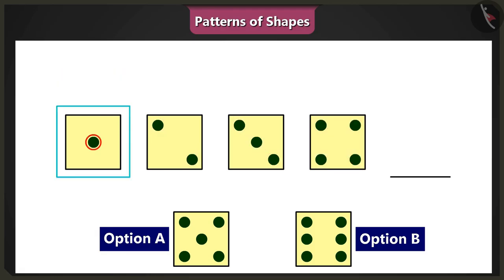Yes, and the number of dots varies in each square, right? I still do not understand this. Look, Binni, the first square has one dot and the second has two.